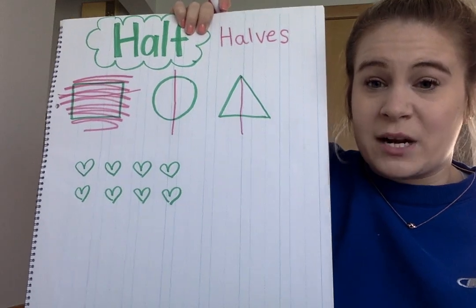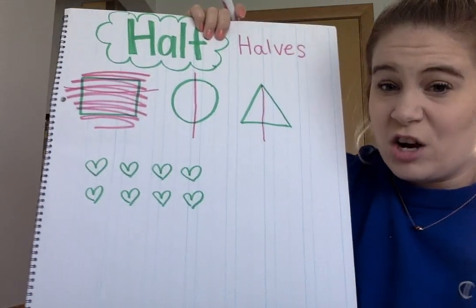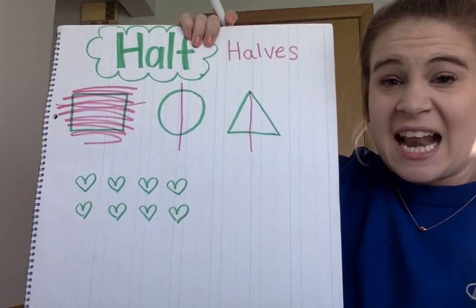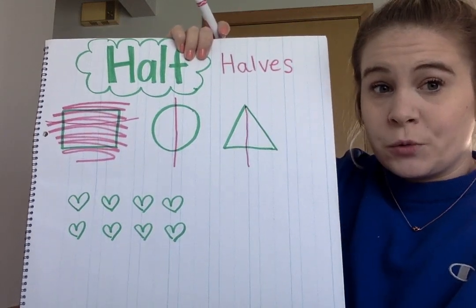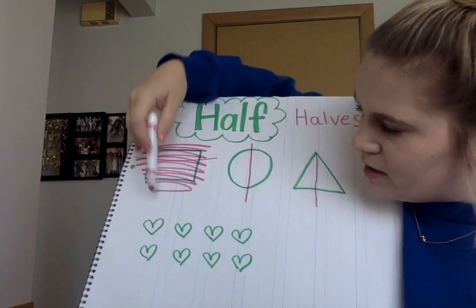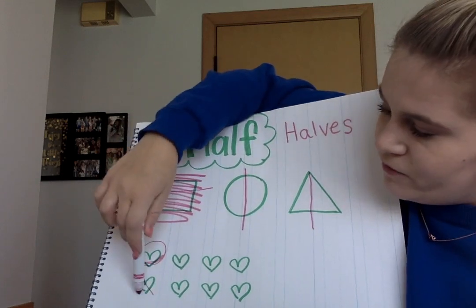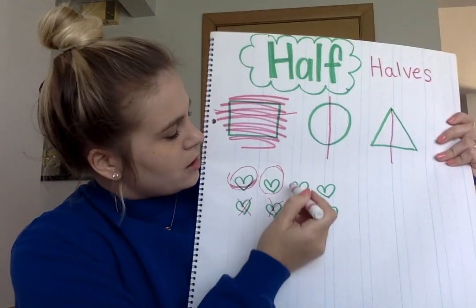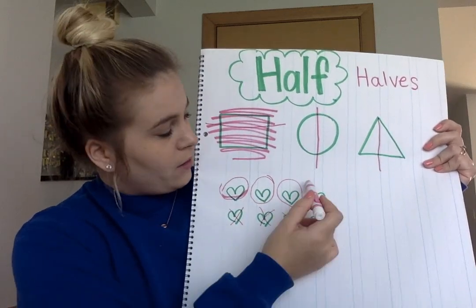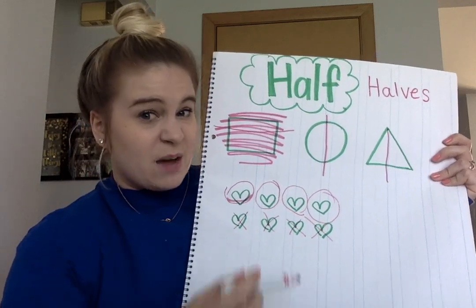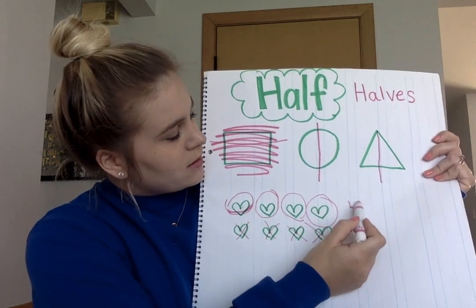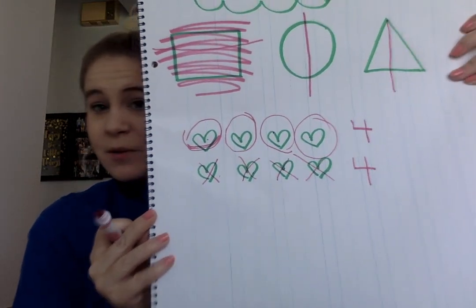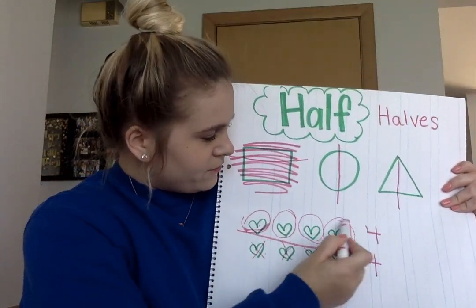Sometimes we might have more than one thing that we want to split in half and share. So maybe I have all of these hearts — let's count: one, two, three, four, five, six, seven, eight. I want to give half of the hearts to you and half to me. So I'm going to do one for me, one for you, one for me, one for you — sharing them in half. Let's see how many I got: one, two, three, four. And you got one, two, three, four. Did one of us have more? No, they were the same — equal parts. So this is halves. Four is half of the hearts.